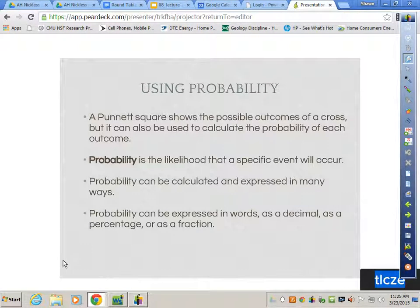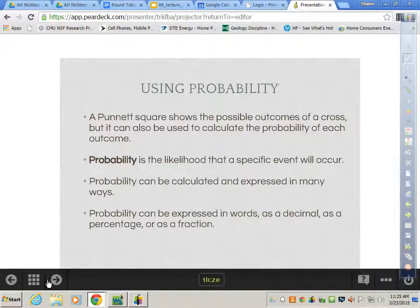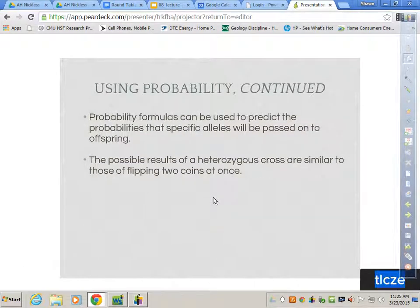A Punnett square shows the possible outcomes of a cross, but it can also be used to calculate probability within each outcome. Probability is the likelihood that a specific event, or in this case, phenotype or genotype, will occur. Probability can be calculated and expressed in many ways, sometimes as a decimal, words, percentage, or fraction. Whatever I ask you for, you need to give me that specific type. So if I say I want a percentage, I want 25%, not a decimal 0.25, or I don't want one-fourth. Although they all mean the same thing, you need to give the correct type of probability. Formulas can be used to predict the probabilities that specific alleles will be passed on to the offspring. The possible results of a heterozygous cross are similar to those of flipping two coins at once.